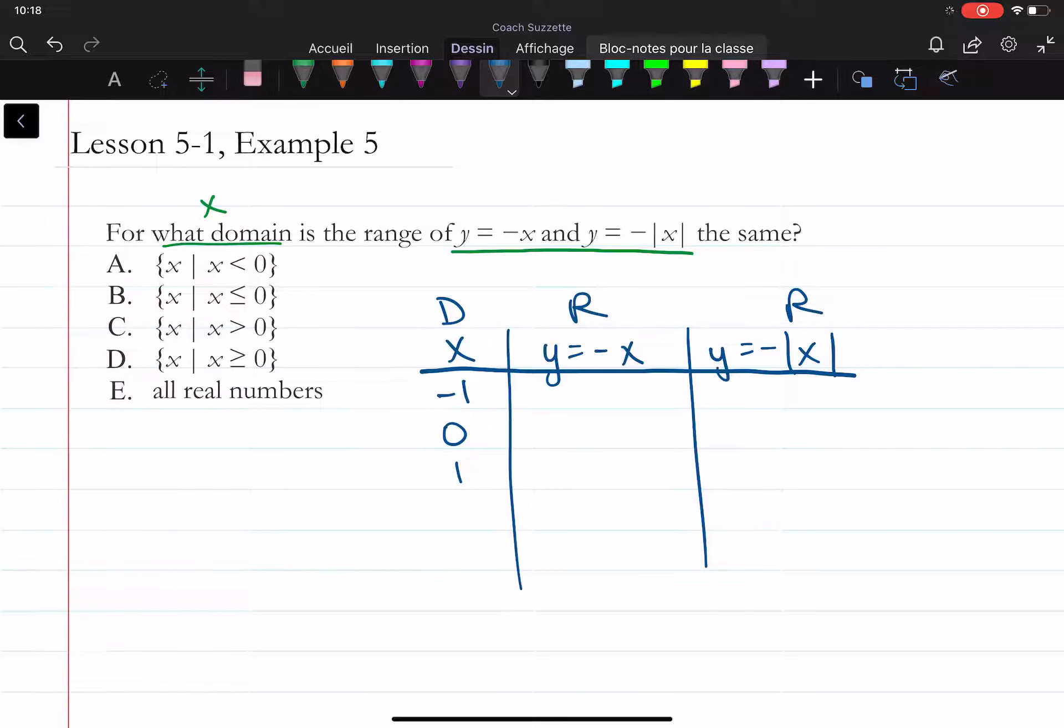Okay, so if I substitute each of these values for x into each of these functions, what do we get in the range? Well, here I'd have negative negative one, that's a positive one, and here I'd have a negative one. So the range is not the same for negative numbers in the domain.